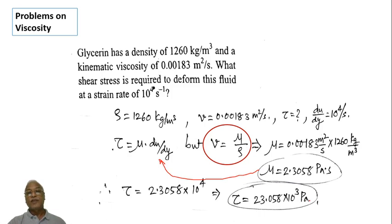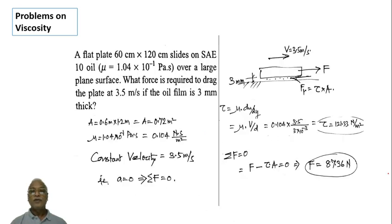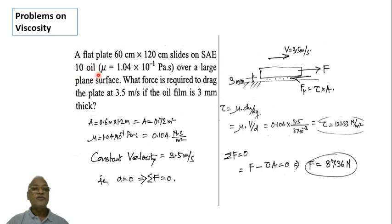Moving to the next problem: a flat plate 60 centimeter by 120 centimeter slides on SAE 10 oil, which has a dynamic viscosity of 1.04 into 10 raised to minus 1 Pascal second, over a large plane surface. The area of the plate is calculated as 0.6 meters into 1.2 meters, giving an area of 0.72 meter square.